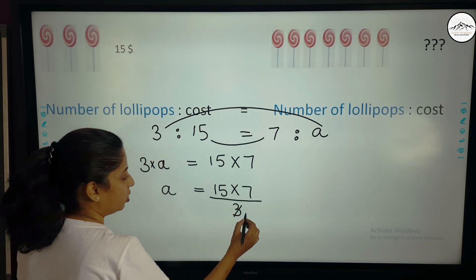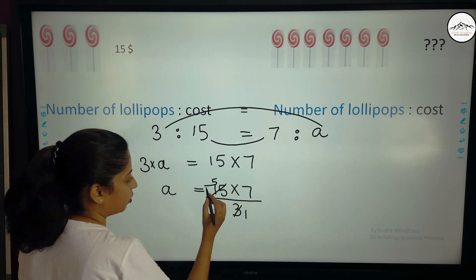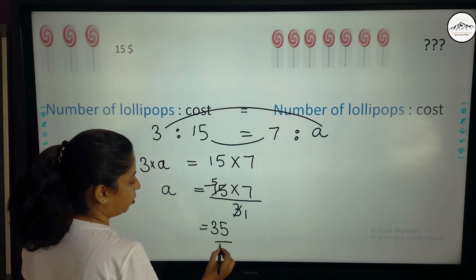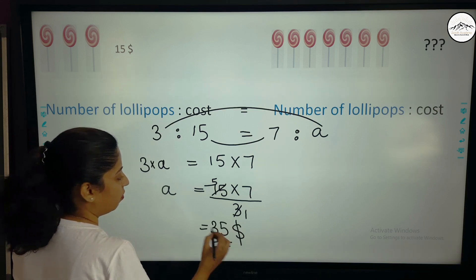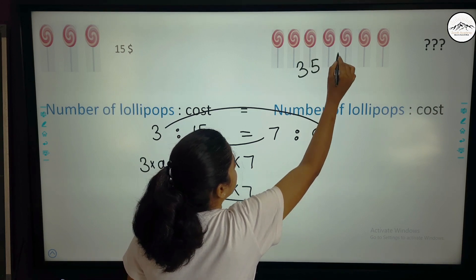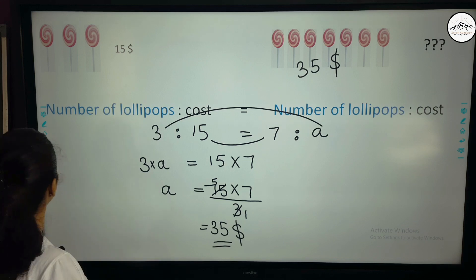So 3 ones are 3 and 15 also comes in the table of 3. How many times? 5 times. So 5 7's are 35. So this will be 35 dollars. The cost of 7 is 35 dollars. I hope you understood this very well.